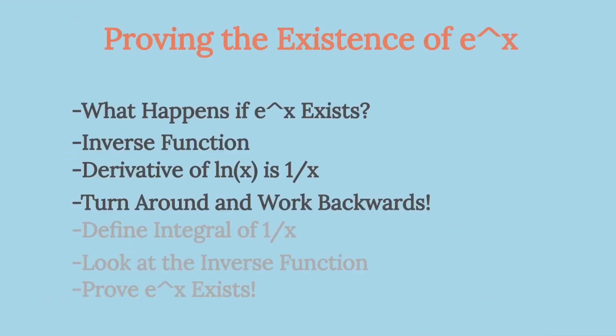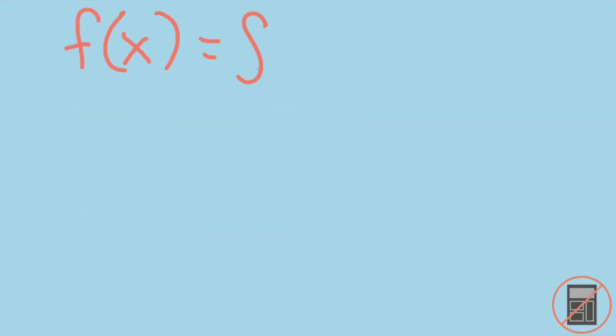Now let's use our intuition behind why the derivative must be 1 over x and work backwards. For the next part of this solution, we will look at the integral of 1 over x and then look at its inverse. We'll show that that inverse function is equal to its derivative, thus showing there's a non-zero exponential function equal to its derivative, and this will show the existence of the special number e. Define f of x to be the integral from 1 to x of 1 over t dt. As we expect, this is going to be the inverse of the exponential function, which we want to prove exists.